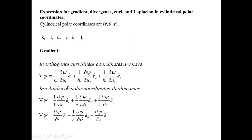With h₁ = 1, h₂ = r, h₃ = 1, u₁ = r, u₂ = θ, u₃ = z, and unit vectors ê_r, ê_θ, ê_z, the gradient becomes: ∇ψ = (∂ψ/∂r) ê_r + (1/r)(∂ψ/∂θ) ê_θ + (∂ψ/∂z) ê_z.